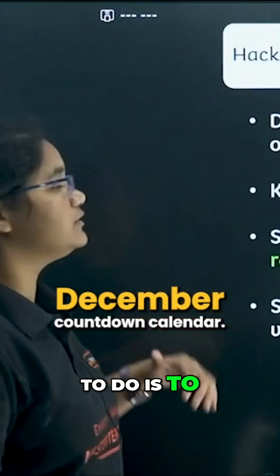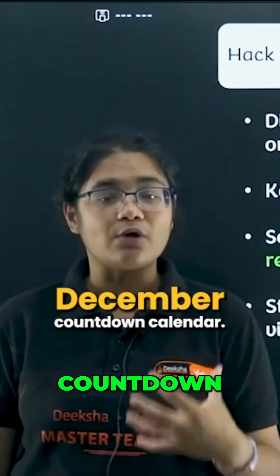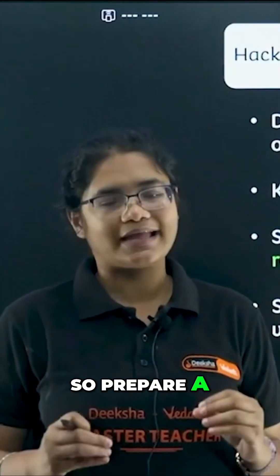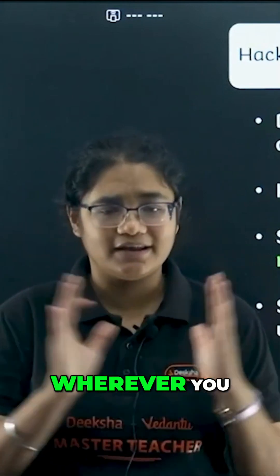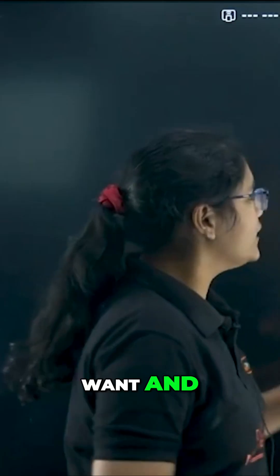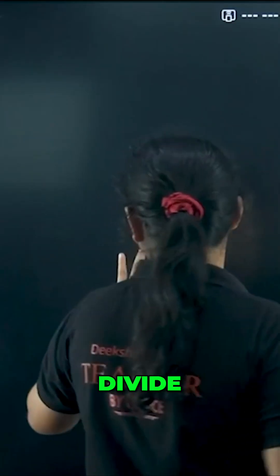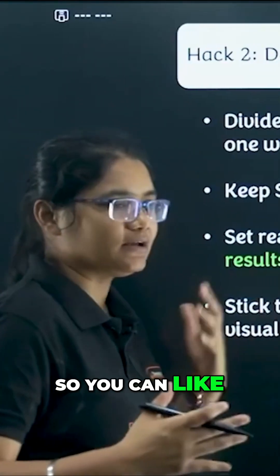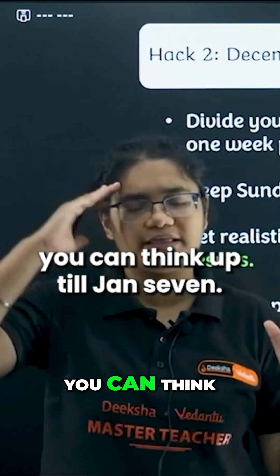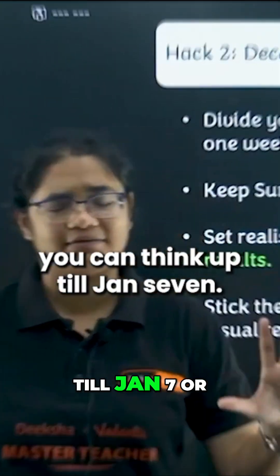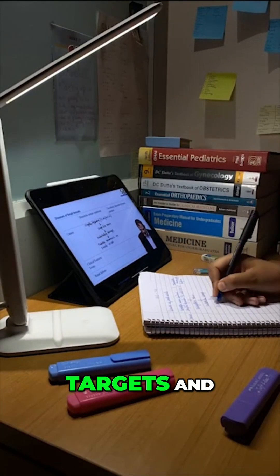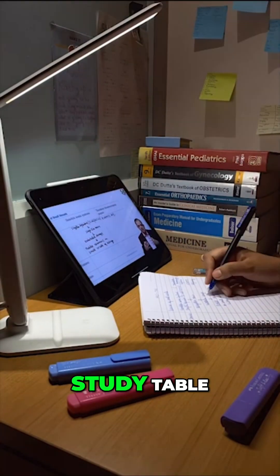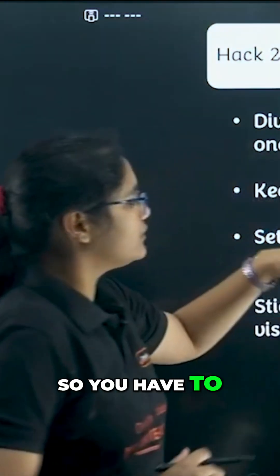What you have to do is prepare a December countdown calendar — online, offline, wherever you want. Divide it into eight blocks, roughly up till January 7th. Set your daily targets and stick the plan near your study table.